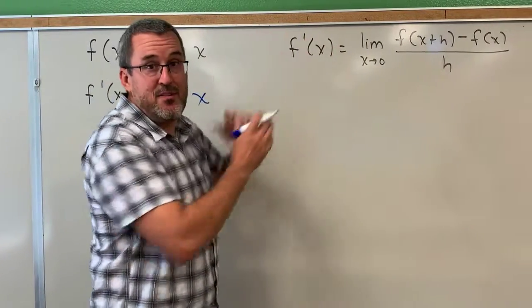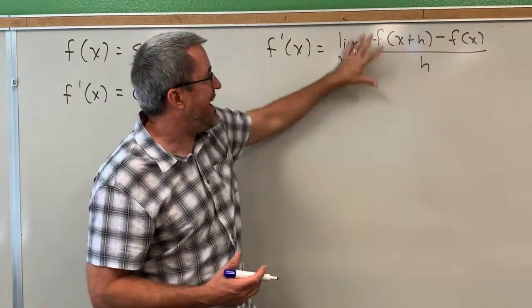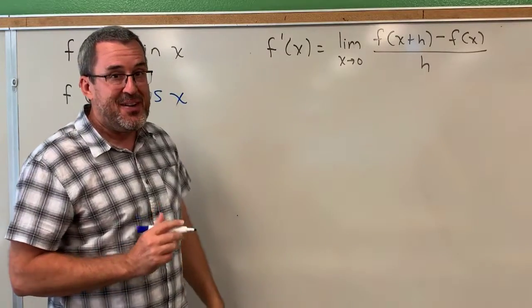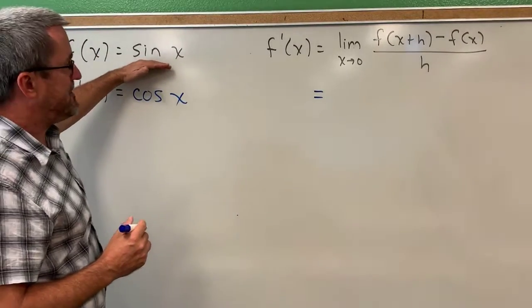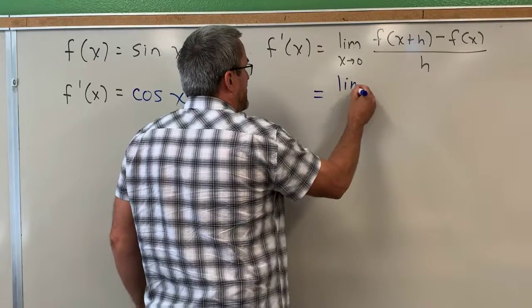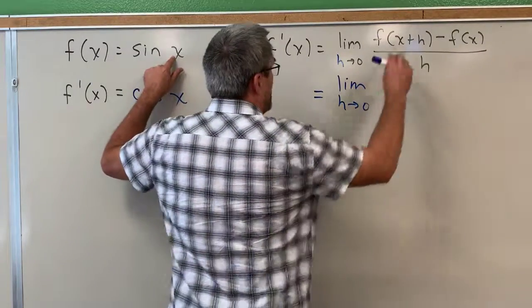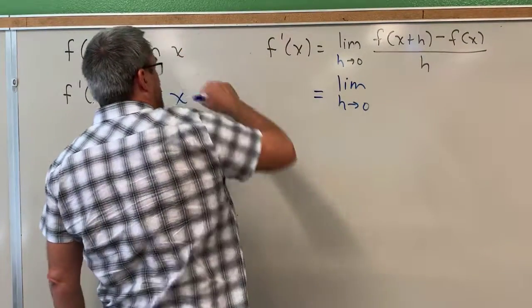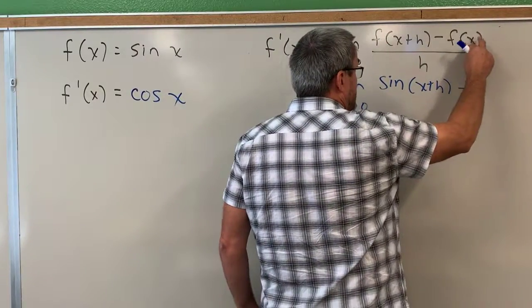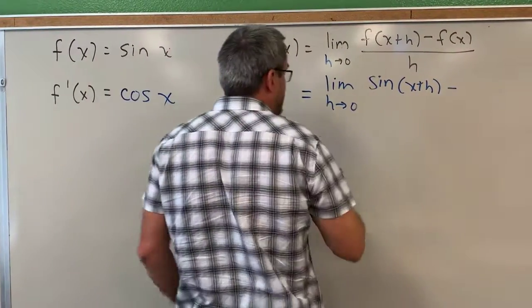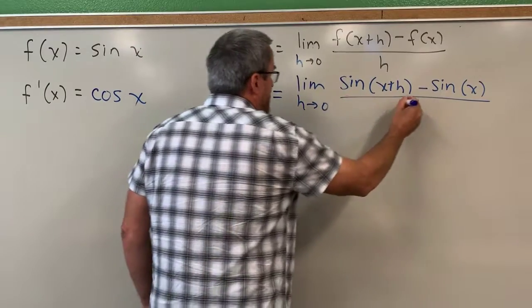From a previous video, you can make sense of why this formula makes sense. We're going to start with the limit definition of derivative and apply it in the case of the function sine of x. It would go like this: we need the limit as h approaches zero of f of x plus h — so if we input x plus h into this function, the output is sine of x plus h — minus f of x, which is sine of x. All of that divided by h.